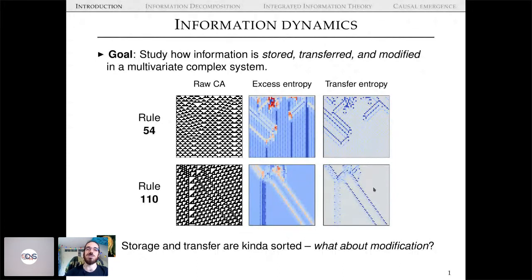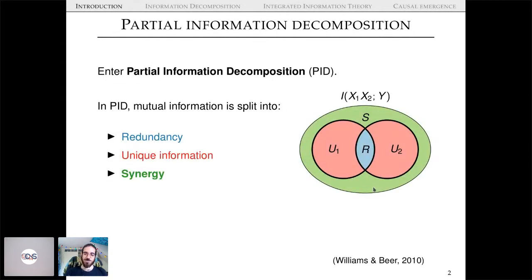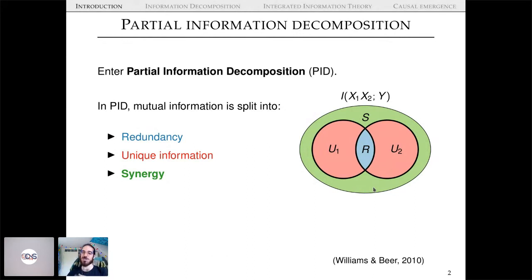To study information modification, enter partial information decomposition, or PID, proposed by Williams and Beer in 2010. In PID, mutual information is split into four disjoint parts: redundancy, two unique informations, and synergy. When you go to higher dimensions with more than two variables, you need to do a bit of work to ensure these atoms remain interpretable.